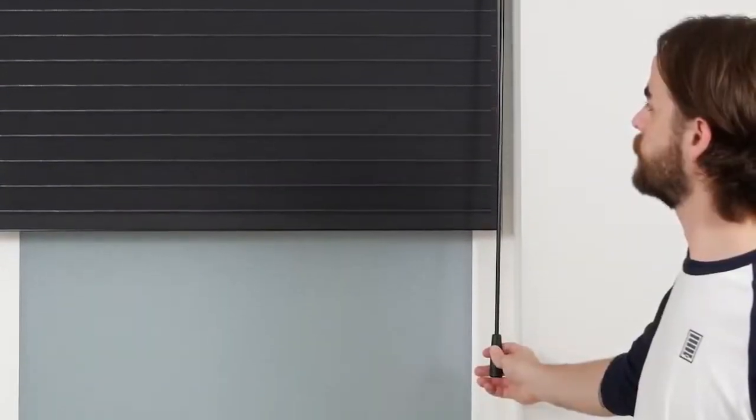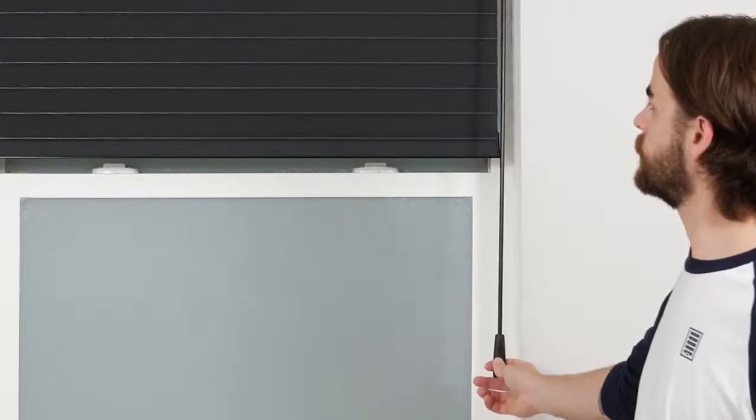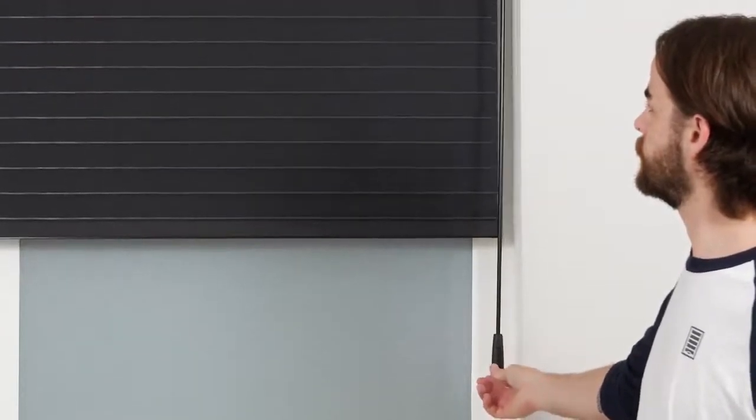Pressing the up button will raise the shade. Pressing the stop button will halt the shade while it's in motion, and pressing down will lower the shade.